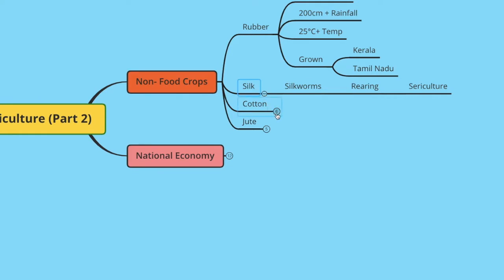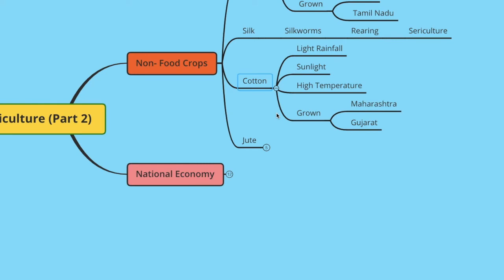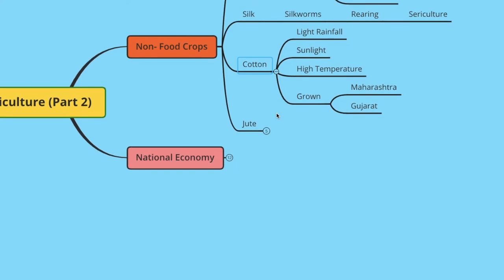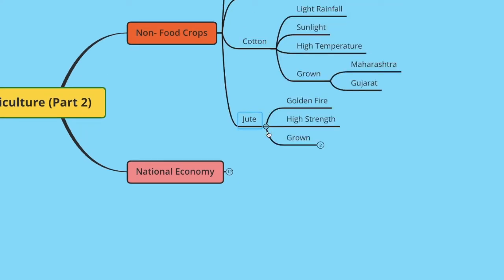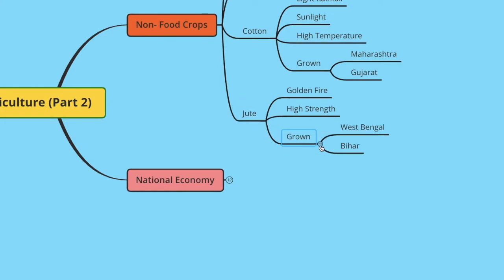Moving on to cotton — cotton requires light rainfall, heavy sunlight, and high temperature, and is usually grown in abundance in Maharashtra and Gujarat. Next we have jute, also called the golden fiber, known for its high strength. Jute is used to make ropes, mats, etc., and is grown in West Bengal and Bihar.